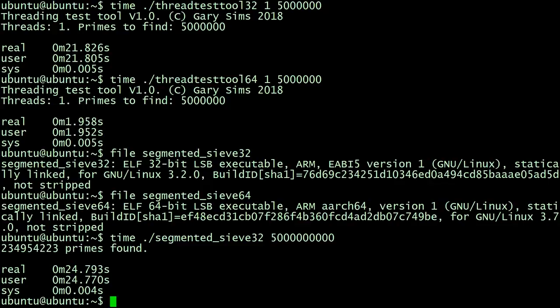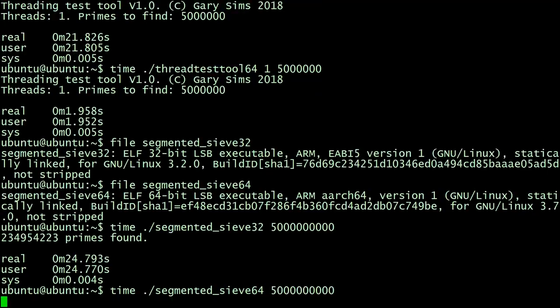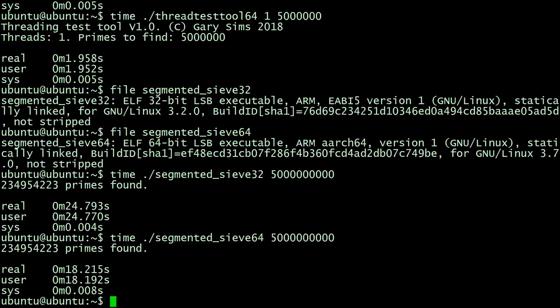Okay, so now let's run exactly the same program. We'll just change this to the 64-bit version and see how much quicker or even slower it runs here on the Raspberry Pi 4. Okay, there we have it. 18.2 seconds. So that's roughly a 25% speed increase. So again, we've seen that the 64-bit version runs a lot quicker than the 32-bit version.